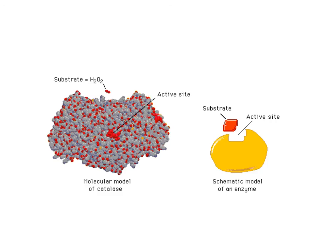The overall enzyme contains a specific geometric shape called the active site, where the reaction takes place. The molecule acted upon is called the substrate. With this basic understanding of enzyme structure, we will next learn how the enzyme-substrate complex is formed.